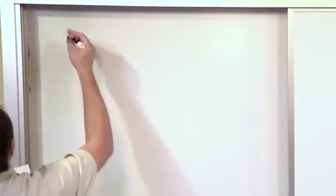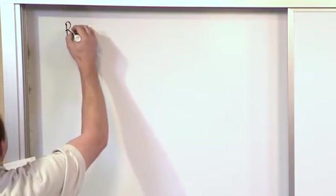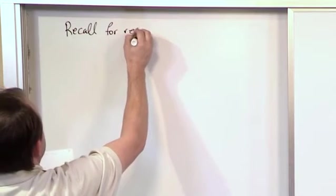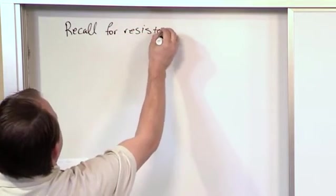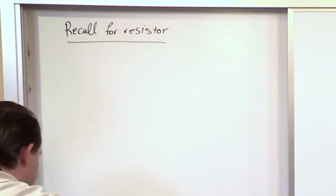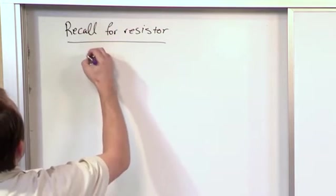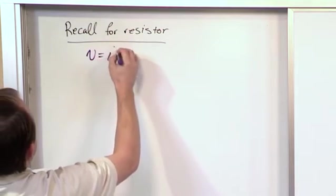So recall for a resistor. Resistor is the easiest thing to understand because it's not very complicated. The simplest thing that we've learned in this course, something that you definitely know is true at all times in circuits, is Ohm's law. V is equal to I times R.